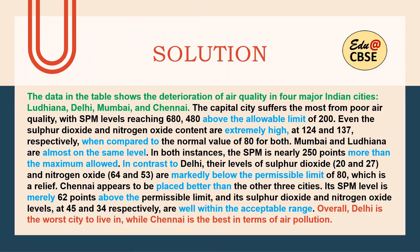Now the solution. Here is the solution. First, the opening line — that is paraphrasing: 'The data in the table shows the deterioration of air quality.' I've used 'deterioration of air quality' because in the question it was 'pollution' — so what is pollution? Deterioration of air quality in four major Indian cities: Ludhiana, Delhi, Mumbai, and Chennai.